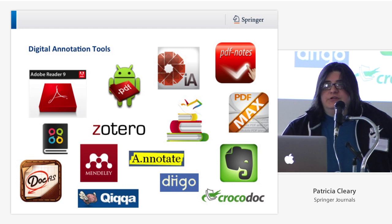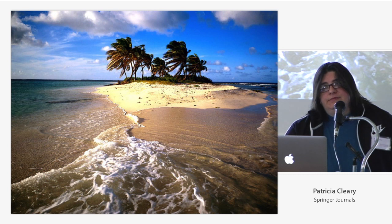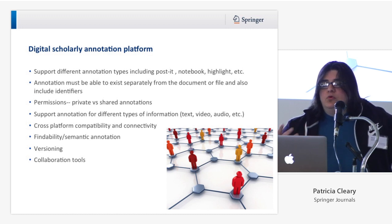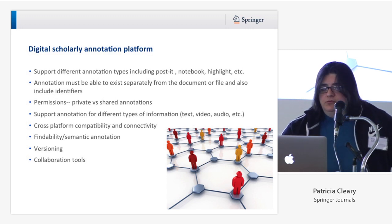Right now we have a lot of digital annotation tools, but they're not connected — they're all islands. What we need is some kind of a platform, something where we can support the different annotation types. Annotation must be able to exist separately from the document but also include identifiers. Permissions — private versus shared annotations — support for different types of information, findability, versioning, and collaborative tools.